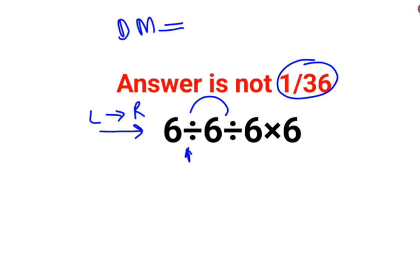So first this division we will tackle, then this one, then this one. 6 divided by 6 is 1, divided by 6, multiplied by 6. So basically we have 1 upon 6 multiplied by 6. So this is cancelling. The answer for this question is just 1.